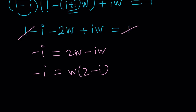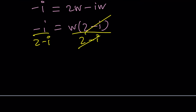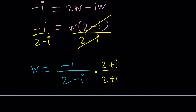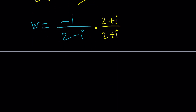Since we're solving for W, we divide both sides by 2 minus I. To complete this division, we use the conjugate. W equals negative I over 2 minus I. Multiply by 2 plus I over 2 plus I, which is 1. After distributing, we get negative 2I minus I squared. Since I squared is negative 1, that's 1 minus 2I, divided by 4 plus 1 — from sum of two squares again — which is 5. So that's the value for W.